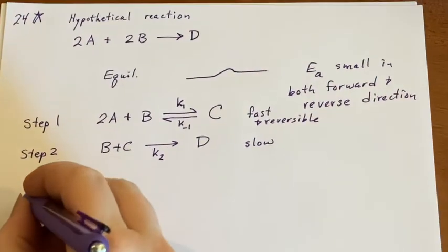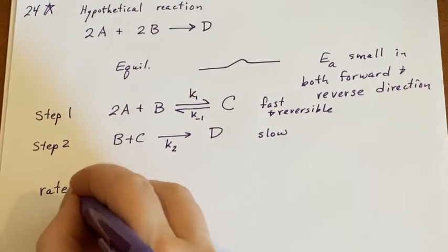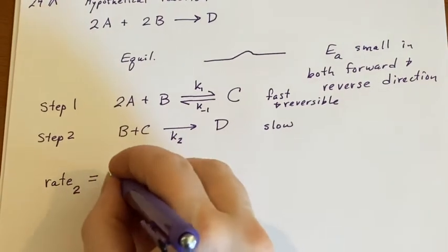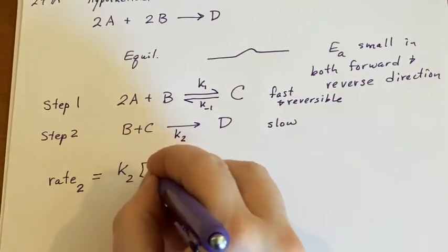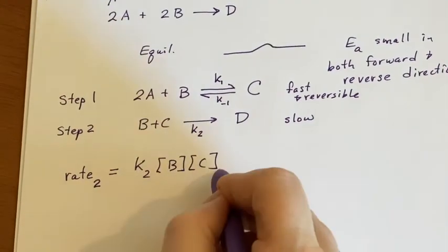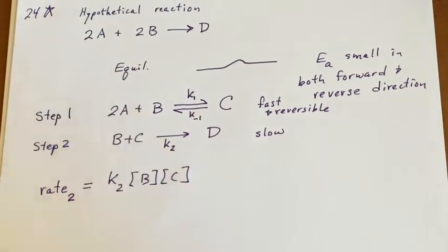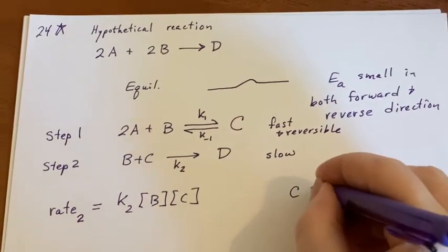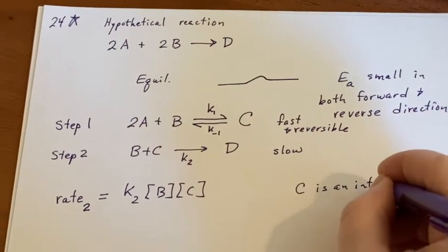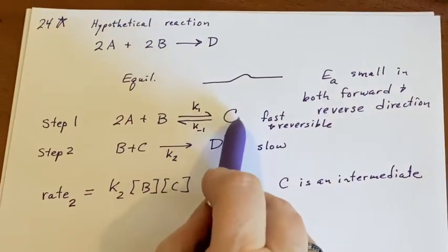We start by saying the second step is slow, so we start with rate₂, which is K₂ times the concentrations of B and C. This is an elementary step, so I just use what's there. But C is an intermediate—we can't keep it in here. I need to replace it with how fast C is being created.